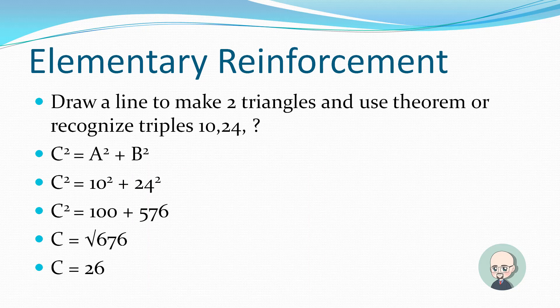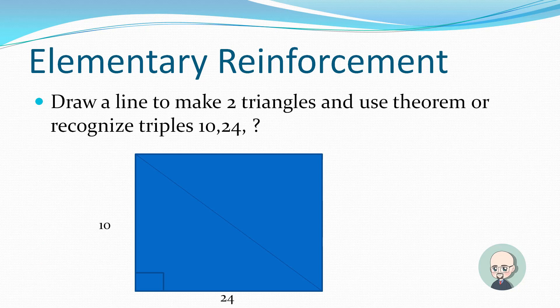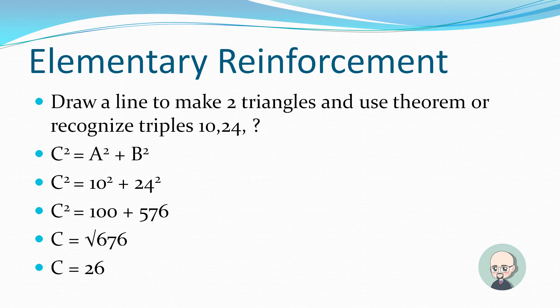We'll solve using the Pythagorean Theorem first. C squared equals A squared plus B squared. We drew the triangle so it's 10 and 24. So C squared, the hypotenuse, equals 10 squared plus 24 squared. C squared equals 100 plus 576. We're taking the root of both sides, we take the root of C squared, it's C. We take the root of the other side, root of 676, it gives us 26.